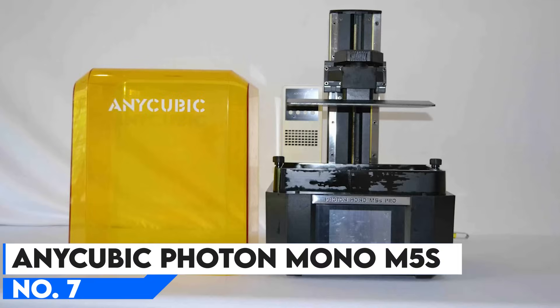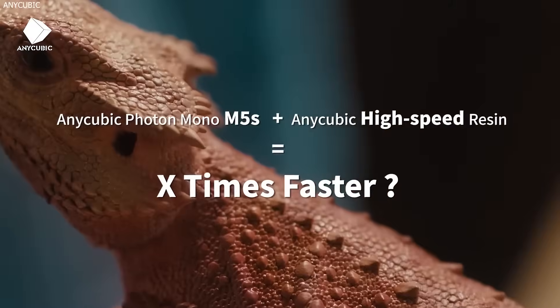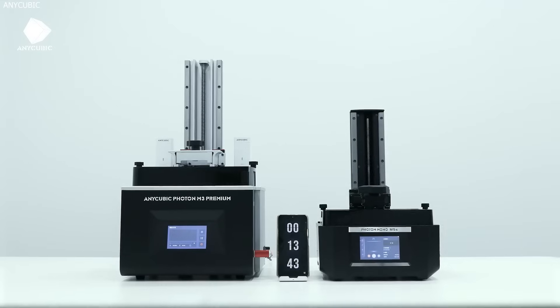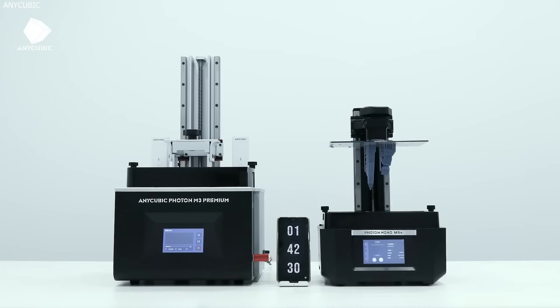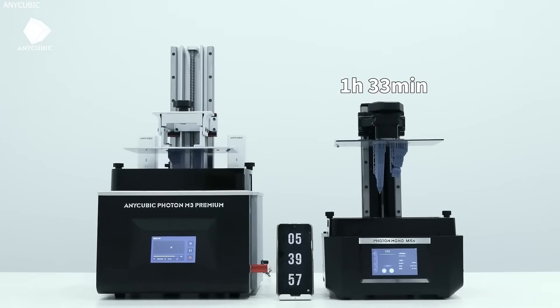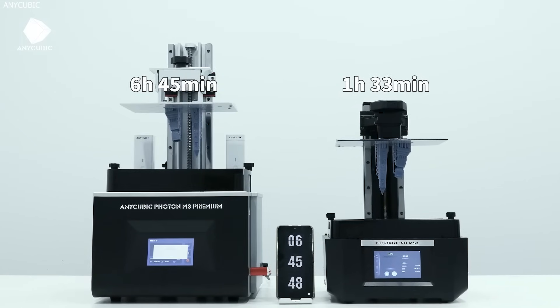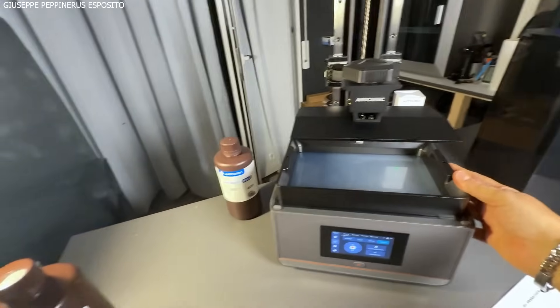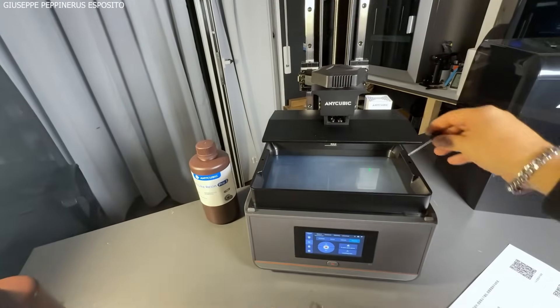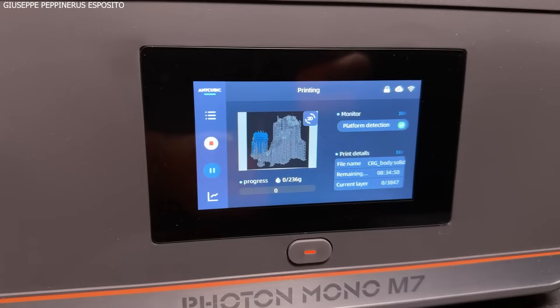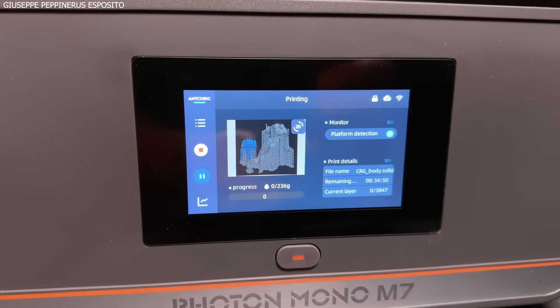Number 7: Any Cubic Photon Mono M5's, Best Resin 3D Printer for High Detail. For those who need extreme precision and high-detail printing, a resin 3D printer is the way to go, and Any Cubic Photon Mono M5's is one of the best in 2025. With an impressive 12K resolution, this printer delivers ultra-sharp details and smooth finishes, making it perfect for miniatures, jewelry, and prototypes.